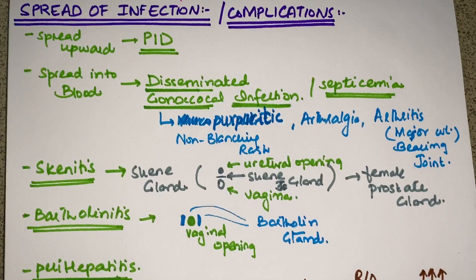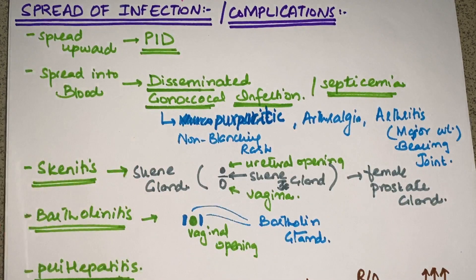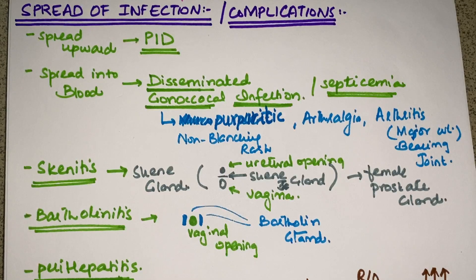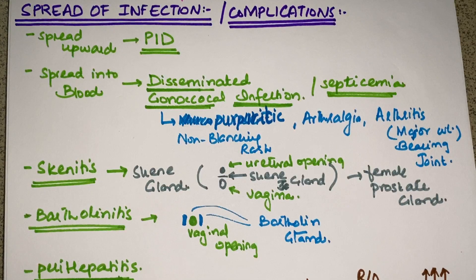Infection can spread to the Bartholin glands leading to bartholinitis. Then infection can spread upward to the areas of the pelvis causing pelvic inflammatory disease. It can also spread into the blood — hematogenous spread — producing disseminated gonococcal infection, also called septicemia. The patient will have a non-blanching purpuric rash on the body, plus joint pain — arthralgia and arthritis — typically involving a major weight-bearing joint like the knee or hip.